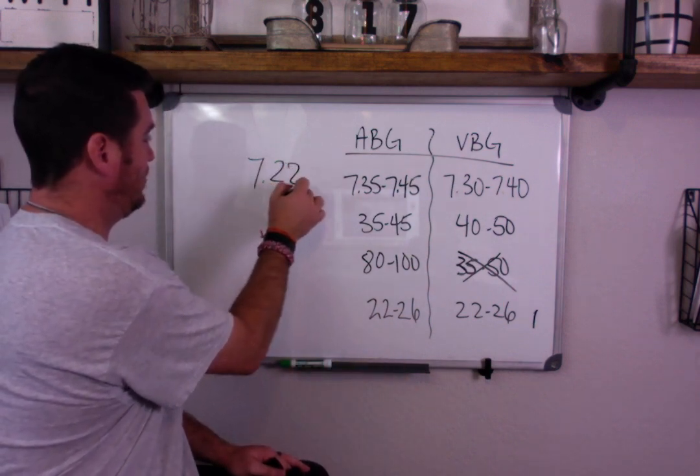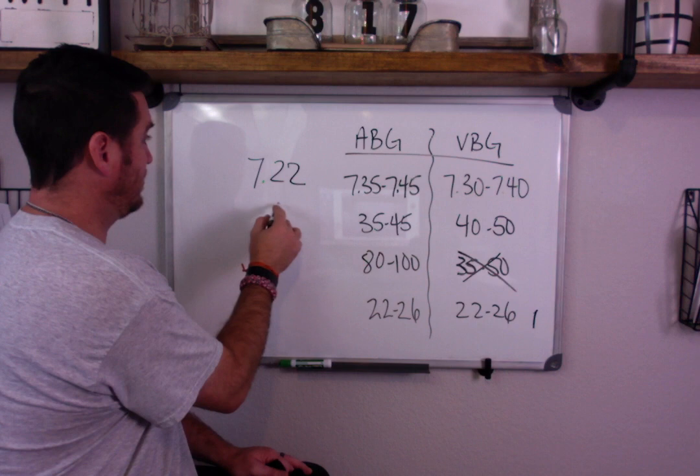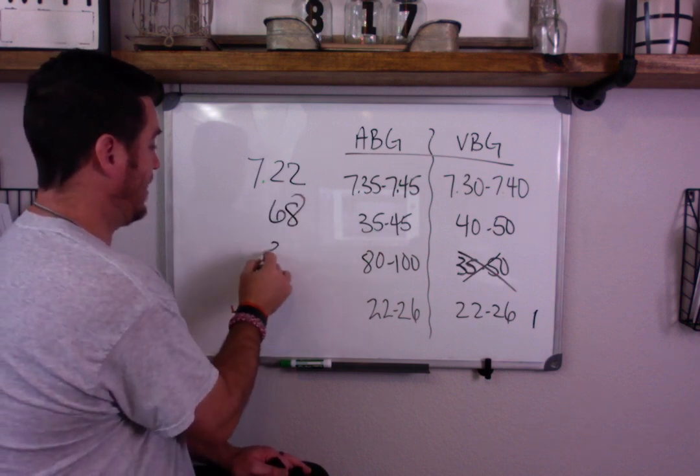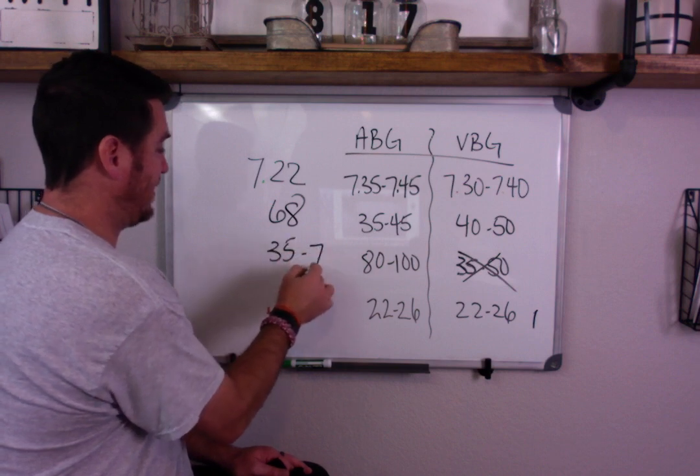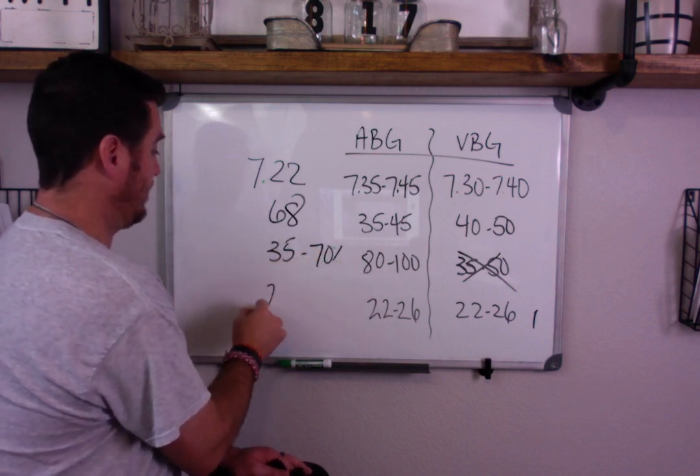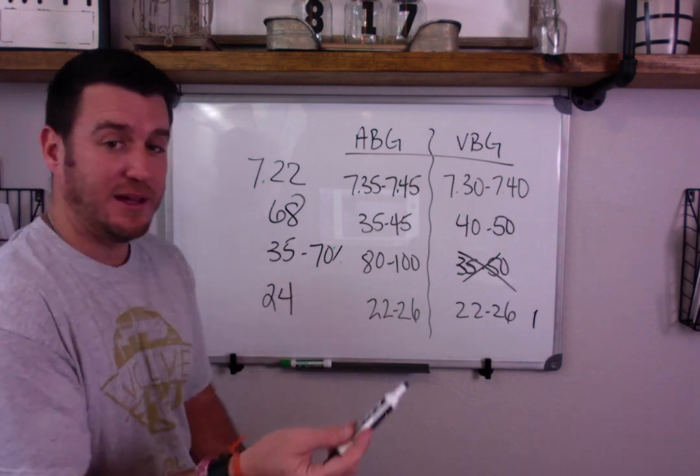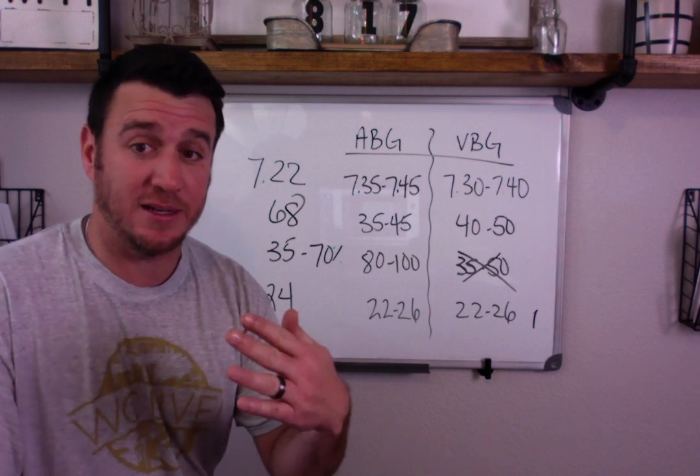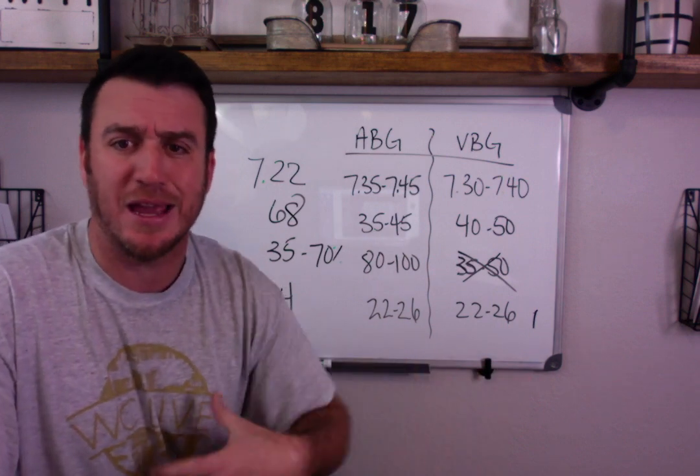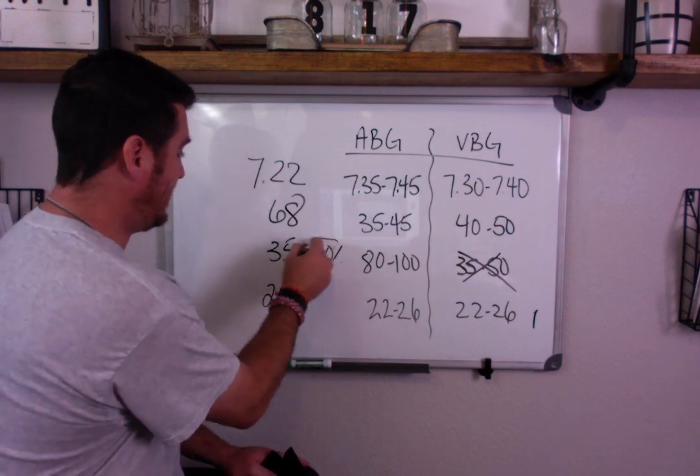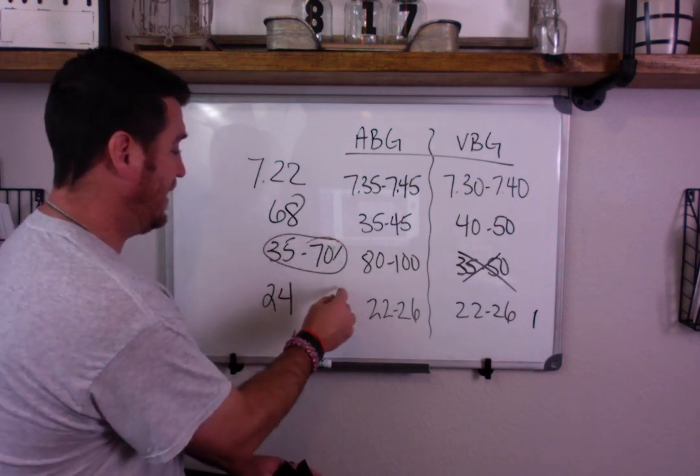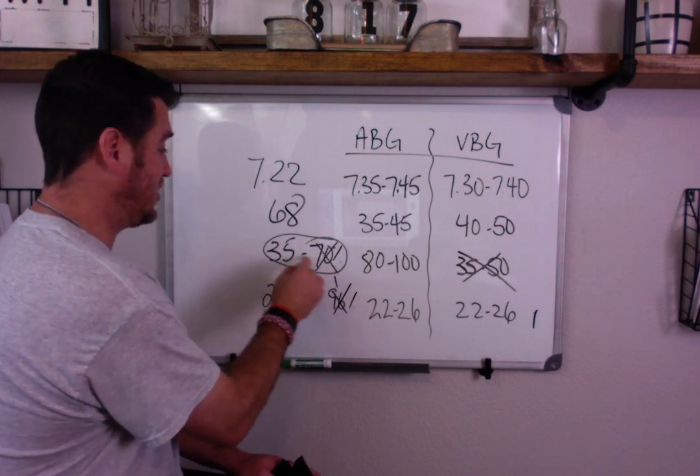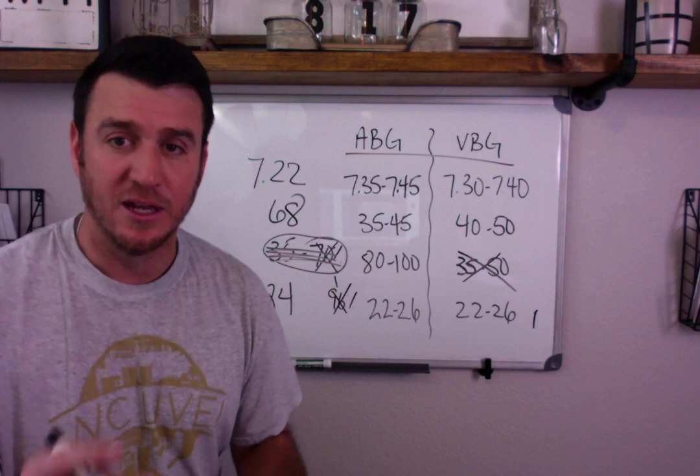Let's say you draw a blood gas but you get venous blood. You're going to get something like this. Let's say you get 7.22, you get a CO2 of 68, you get a PaO2 of 35 with a sat of 70%, and your bicarb is 24. Now how do you know this is venous blood? You tried to get arterial blood but you missed and you got venous blood.